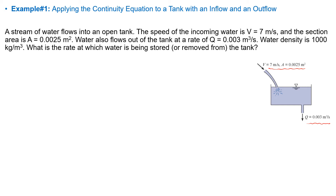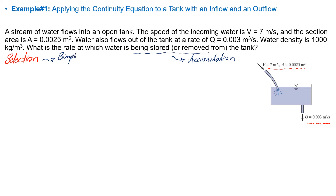From the previous slide, I told you that you need to take a couple of steps to solve the problem. Step number one is selection. We are going to make sure that the continuity equation is the right choice for this problem. Since we are going to find the rate at which water is being stored or removed, we are basically going to find accumulation. Continuity equation is good for finding accumulations, so I am going to use the simplified format because I only have one inlet and one outlet — it does not make sense to use the integrated format.